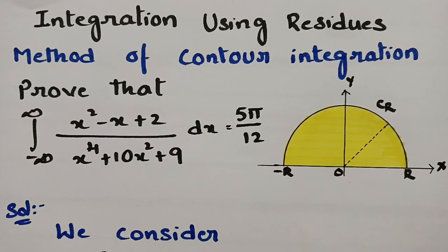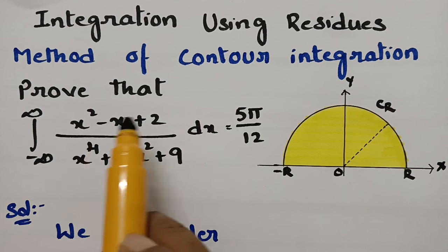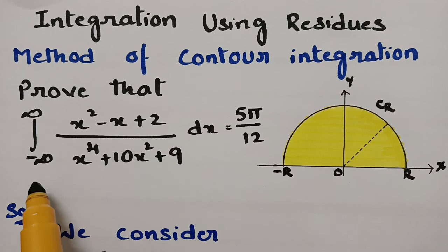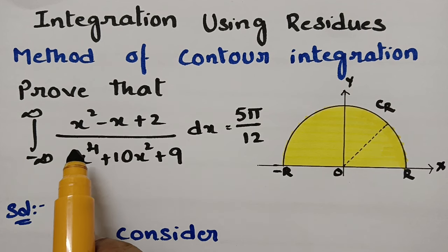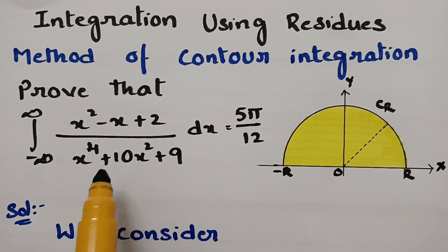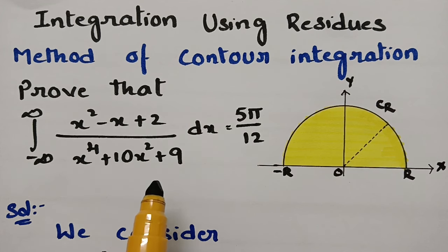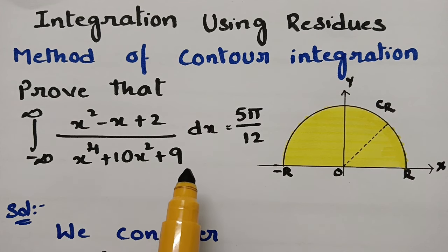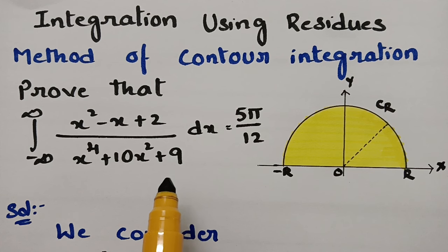Techniques are far more important than just random attempts. In this video, with a simple technique I am going to solve the most important question very easily. Today's topic is integration using residues and I am going to use contour integration. I will prove that the integral from minus infinity to plus infinity of (x² - x + 2)/(x⁴ + 10x² + 9) dx is equal to 5π/12.